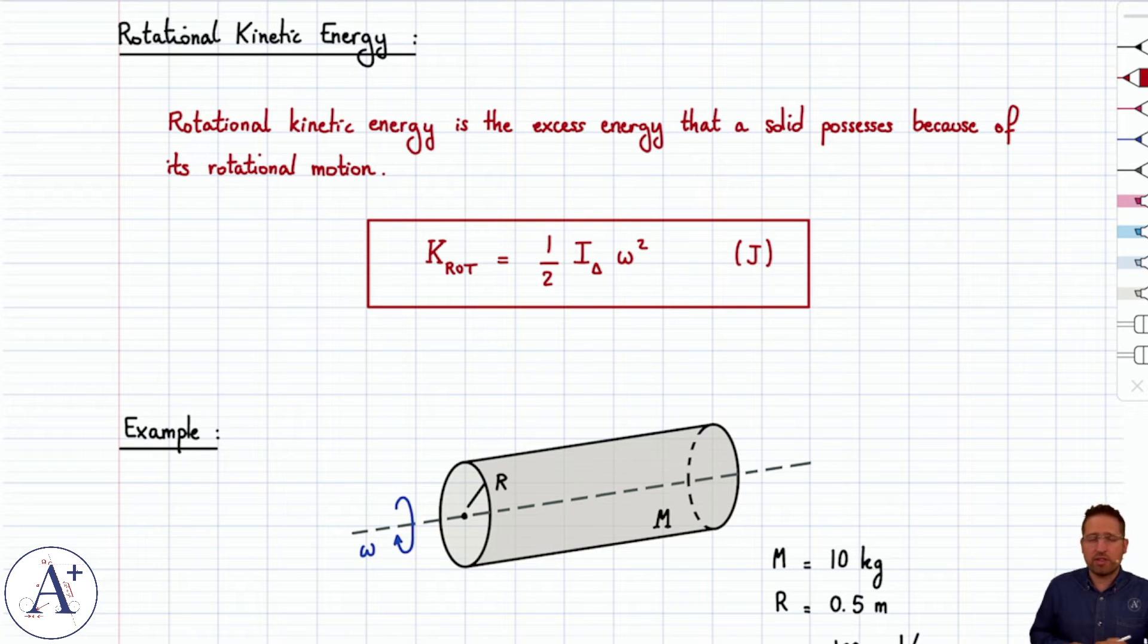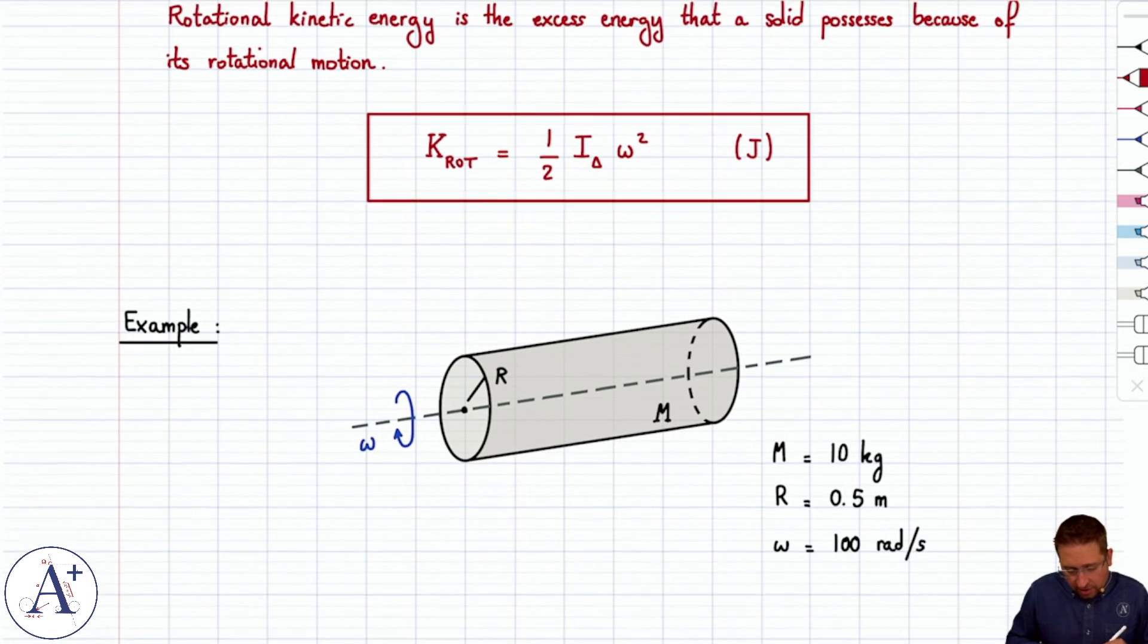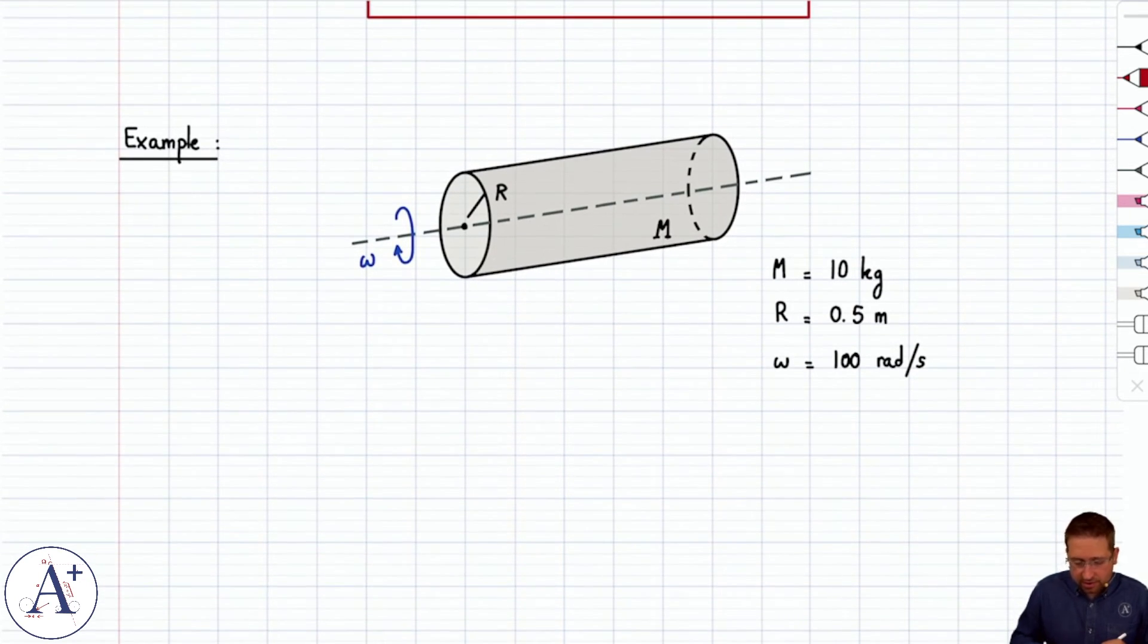We'll see how all that ties together when we talk about the kinetic energy of rolling, but for now let's do a quick example to illustrate the kinetic energy due to rotational motion. If we take this cylinder here that has a certain mass, radius, and is spinning at constant angular speed 100 radians per second, we're simply going to compute the rotational kinetic energy.